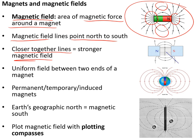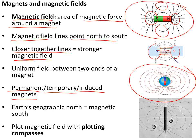A uniform magnetic field can be created by placing the north of one magnet near the south of another, producing parallel field lines. A permanent magnet is always magnetic, but you can also have temporary magnets and induced magnets that are only magnetic when near another magnet. The Earth itself is a giant magnet — its geographic north pole is actually the magnetic south pole, and vice versa. You can plot a magnetic field using plotting compasses by marking the direction the compass points and connecting the arrows to trace field lines.